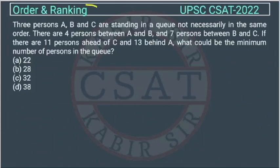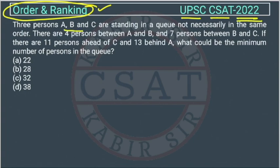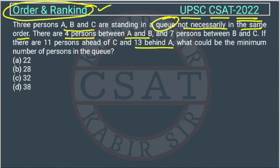This is a question from the chapter 'Order and Ranking' in Reasoning, asked by UPSC in the CZ paper of 2022. Three persons A, B, and C are standing in a queue, not necessarily in the same order. There are four persons between A and B, seven persons between B and C, and if there are 11 persons ahead of C and 13 behind A, what could be the minimum number of persons in the queue?